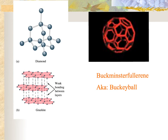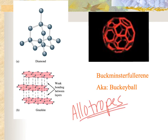Here are examples of what we call allotropes. Diamond, graphite, and the bucky ball are all made out of carbon atoms only. Although they're made up of all carbon atoms, their structures are very different — and that's what we call an allotrope: the same atoms but different structures. Since they have different structures, they have different chemical and physical properties. You don't really need to know allotropes for the test, but it's good to understand the concept.